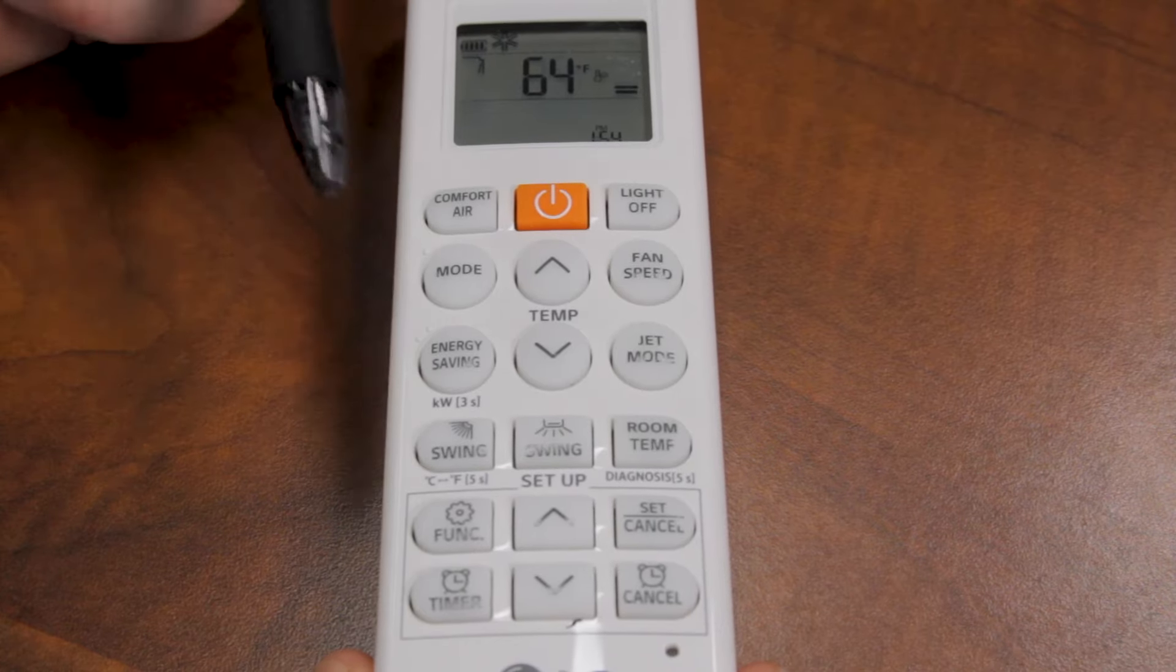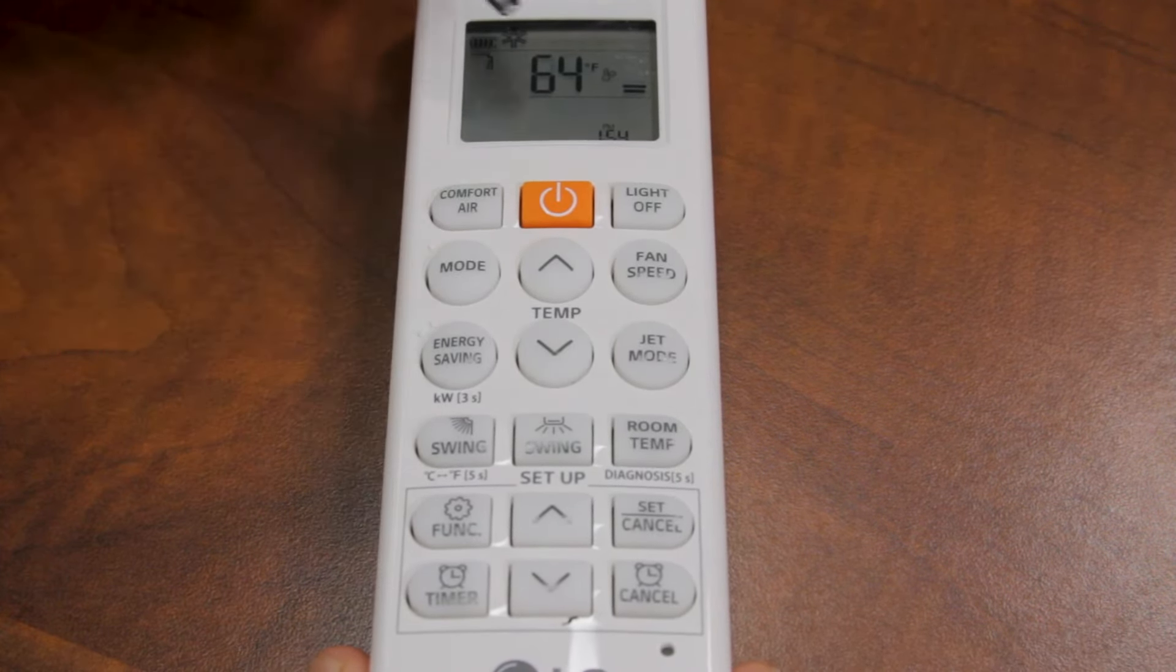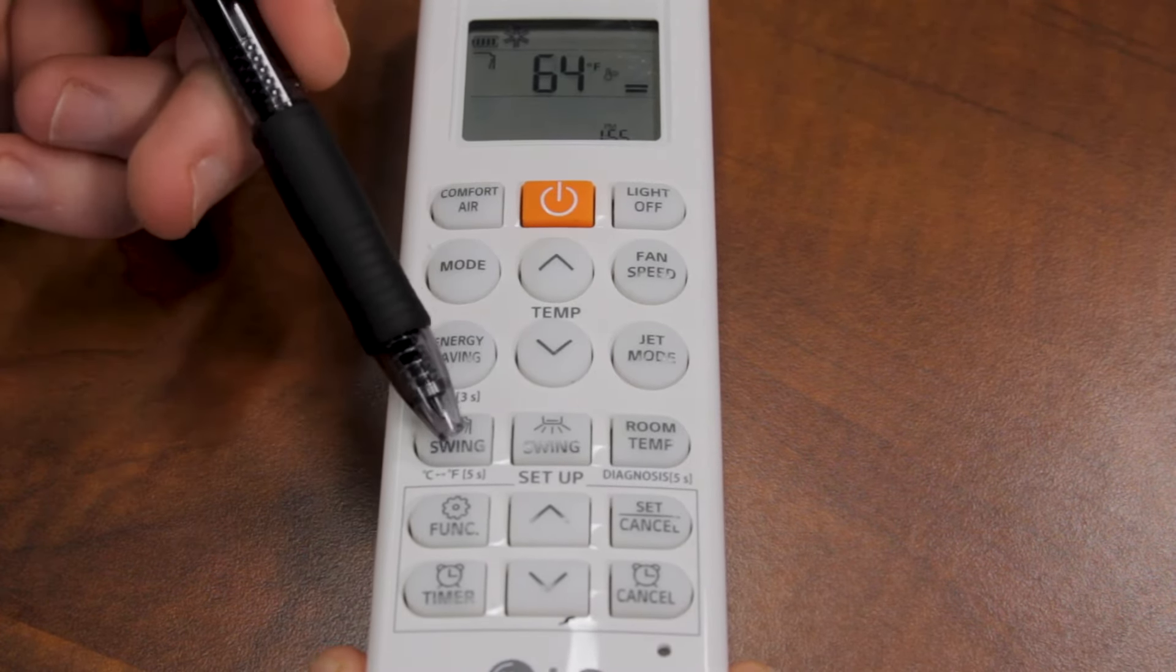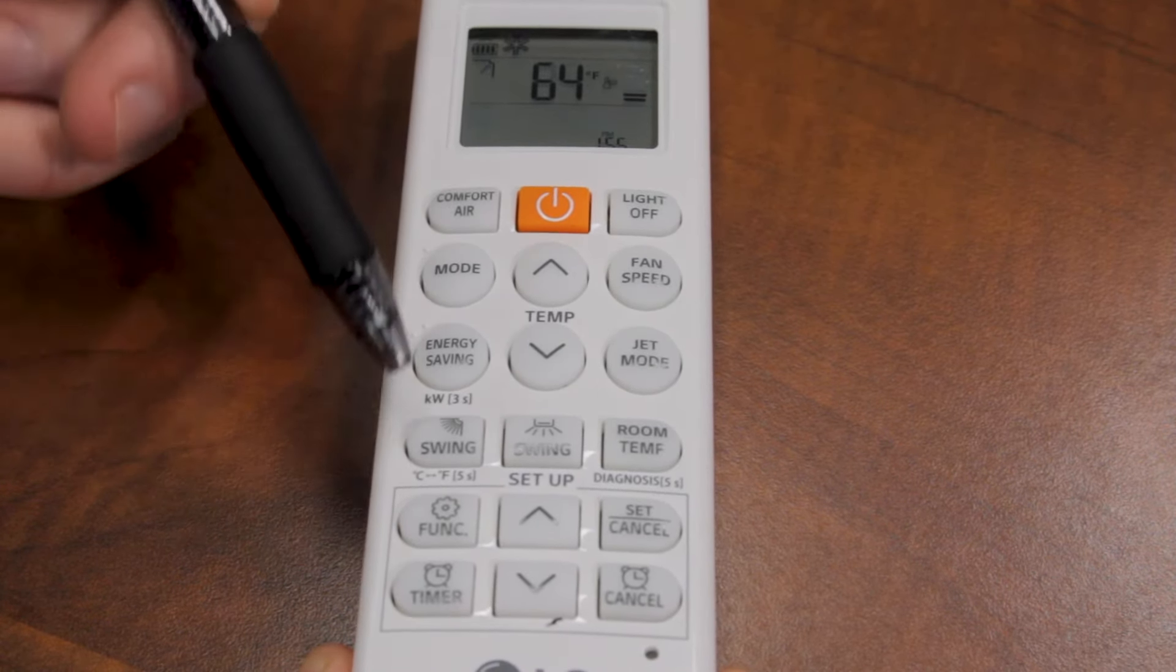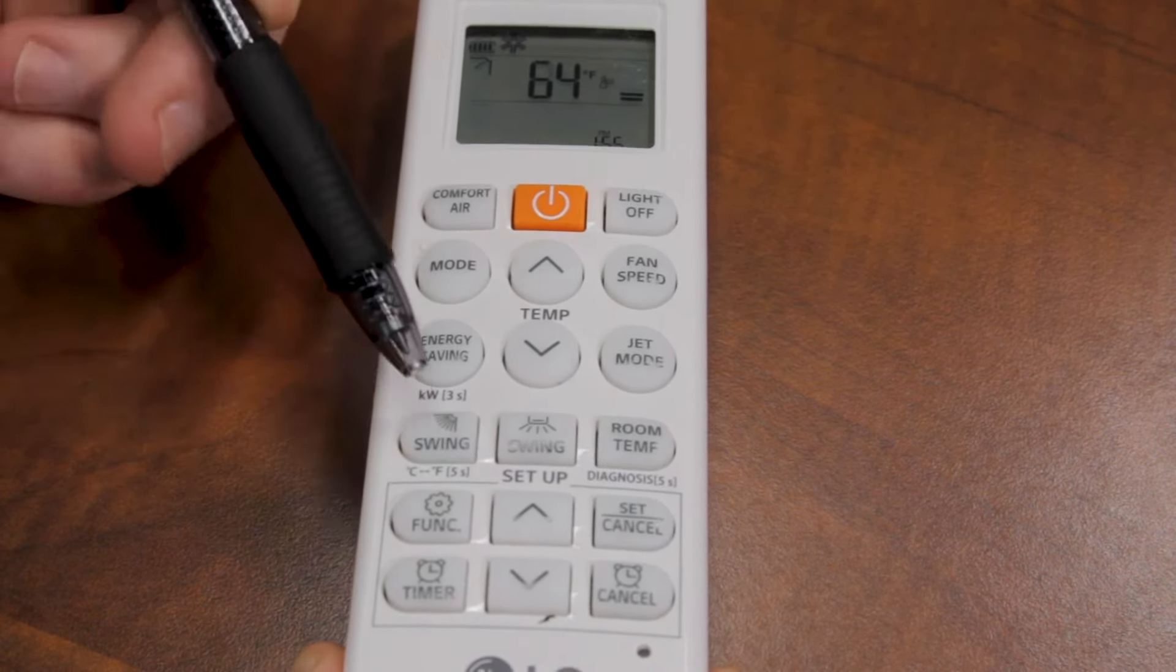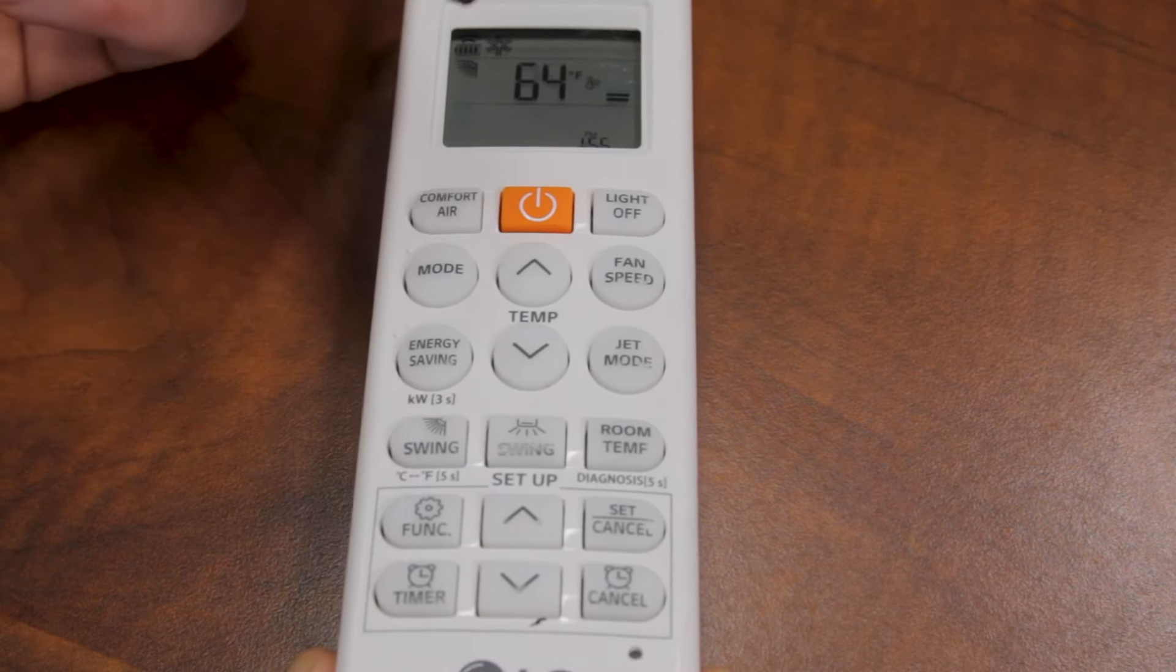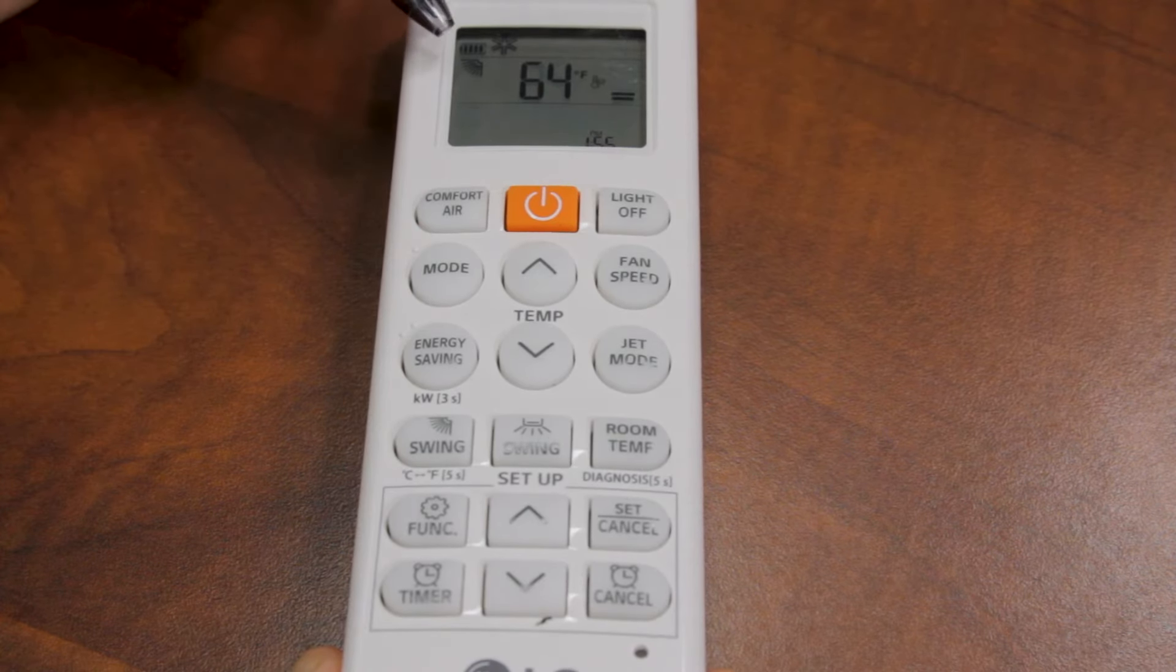To adjust the airflow direction up or down, you're going to press this swing button. It's displayed up here. It starts all the way in the down position. As you press it, that line is going to move up a little bit every time until it goes all the way up. And then it's going to go into an oscillating mode, which will fan the air up and down.